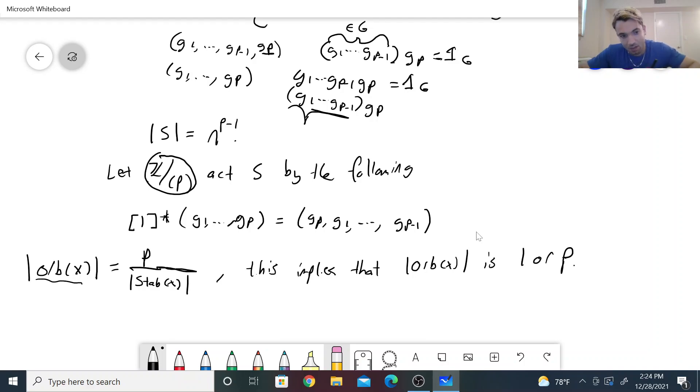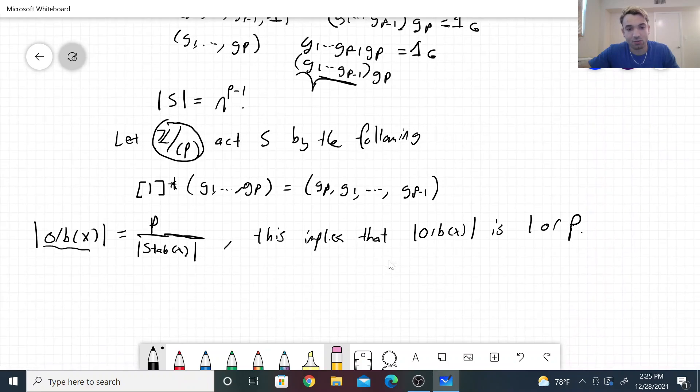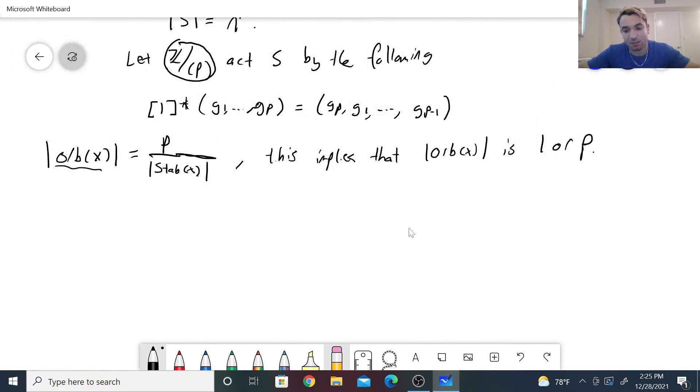We also know that the group action induces an equivalence relation on the set S, and the distinct orbits partition the set S. So if we take each distinct orbit and multiply by how many elements are in that orbit, and add them all together, we'd get the cardinality of S. So rather, the cardinality of S is equal to, well, let's denote first...